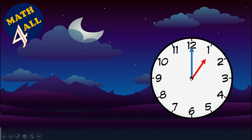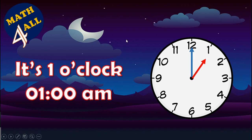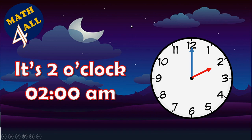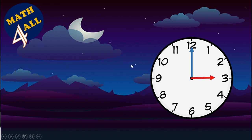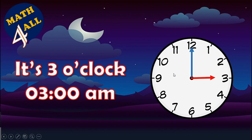The short hand tells us the hour. When it's on one, it's one o'clock or one AM. The clock moves again — now it's two o'clock or two AM. What is the time? Look at the short hand: it's on three, so it's three o'clock or three AM.